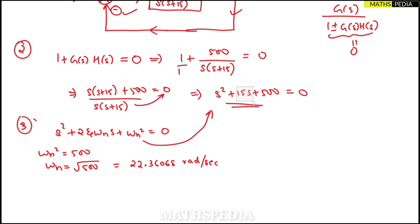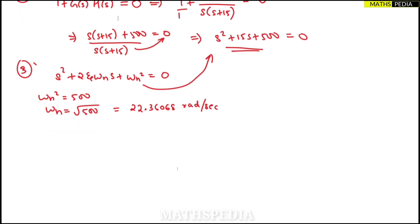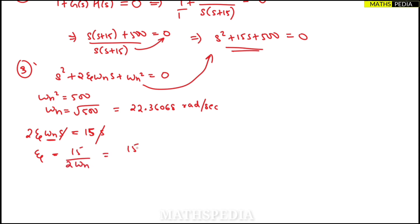Now we find zeta. Comparing 2·zeta·omega_n·s with 15s, we cancel s and get zeta equal to 15 divided by 2·omega_n. Substituting omega_n equal to 22.36068, we get zeta equal to 15 divided by (2 × 22.36068), which equals 0.3354. This is the damping ratio, which has no units.